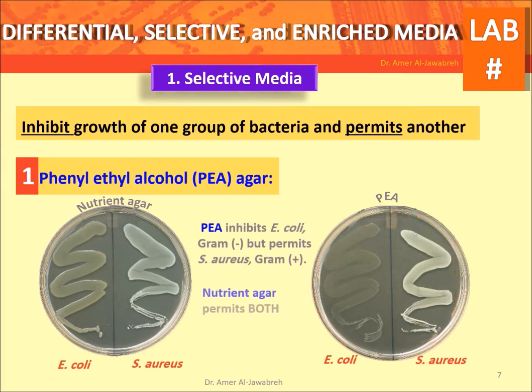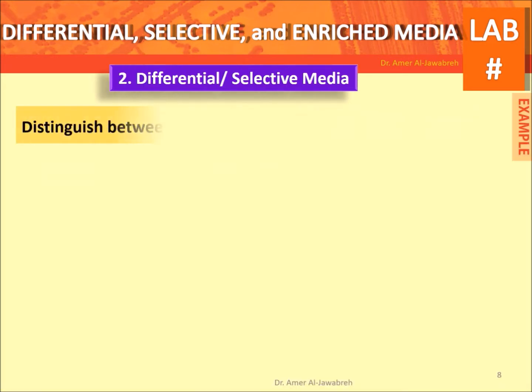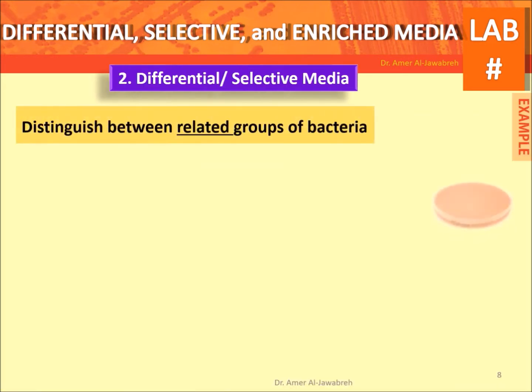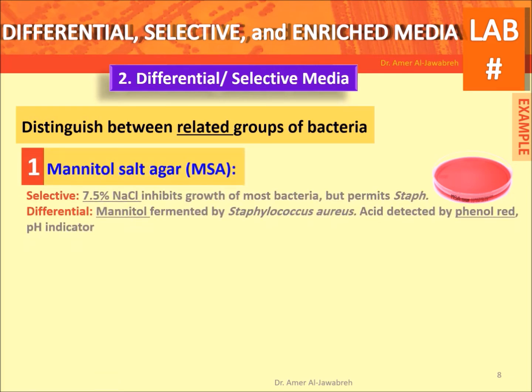Nutrient agar permits both gram-positive and gram-negative bacteria. Differential selective media distinguish between related groups of bacteria.